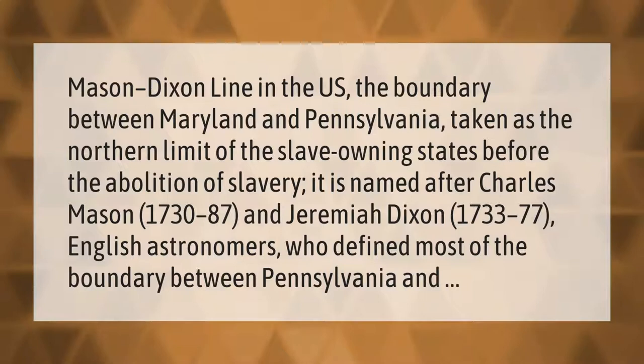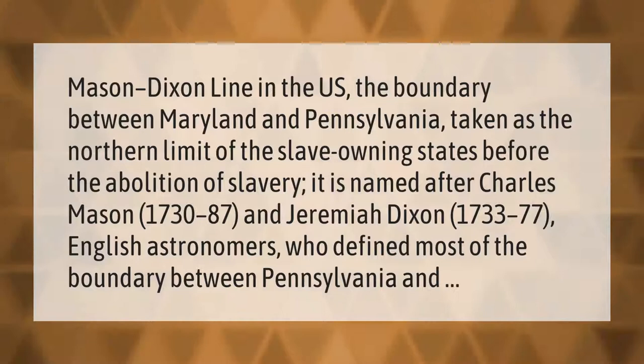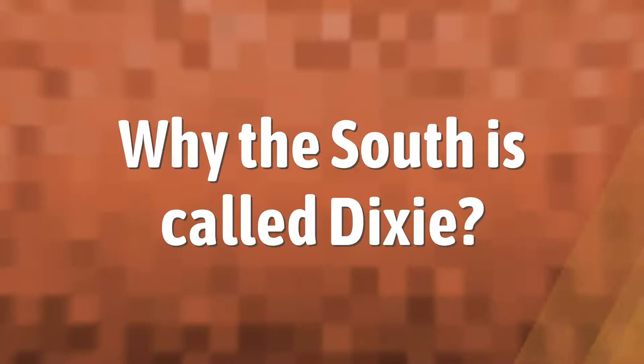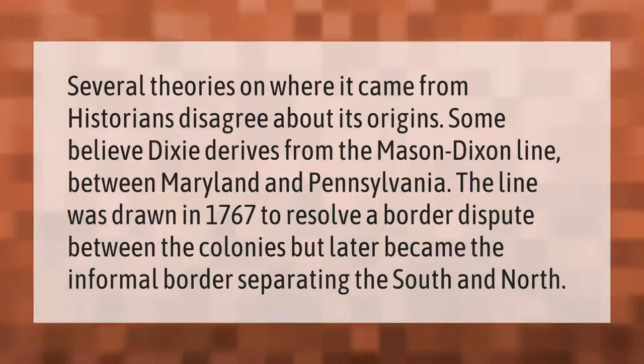The Mason-Dixon line in the U.S. is the boundary between Maryland and Pennsylvania, taken as the northern limit of the slave-owning states before the abolition of slavery. It is named after Charles Mason (1730–87) and Jeremiah Dixon (1733–77), English astronomers who defined most of the boundary between Pennsylvania and neighboring states.